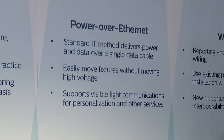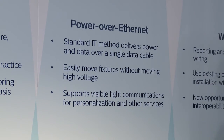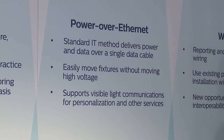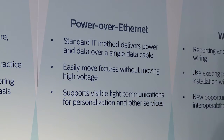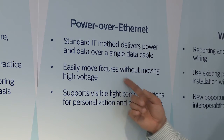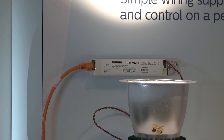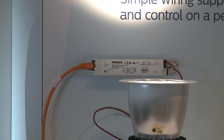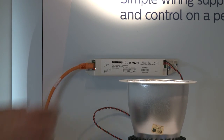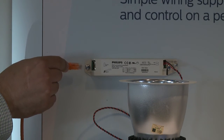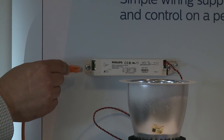Power over Ethernet is the newest way to connect luminaires to a lighting system. It uses standard IT methods to deliver power and data over a single CAT 6 or CAT 7 cable. You can easily move fixtures around without having to deal with high voltage, and it supports visual light communications for personalization, personal control, and other services coming in the future. Power over Ethernet lights — we're showing a Calculite fixture right here — allow power and data to be sent to the fixture through a standard CAT 6 or CAT 7 line. In this case, when I remove the Ethernet cord, we lose the light and the data to the fixture.